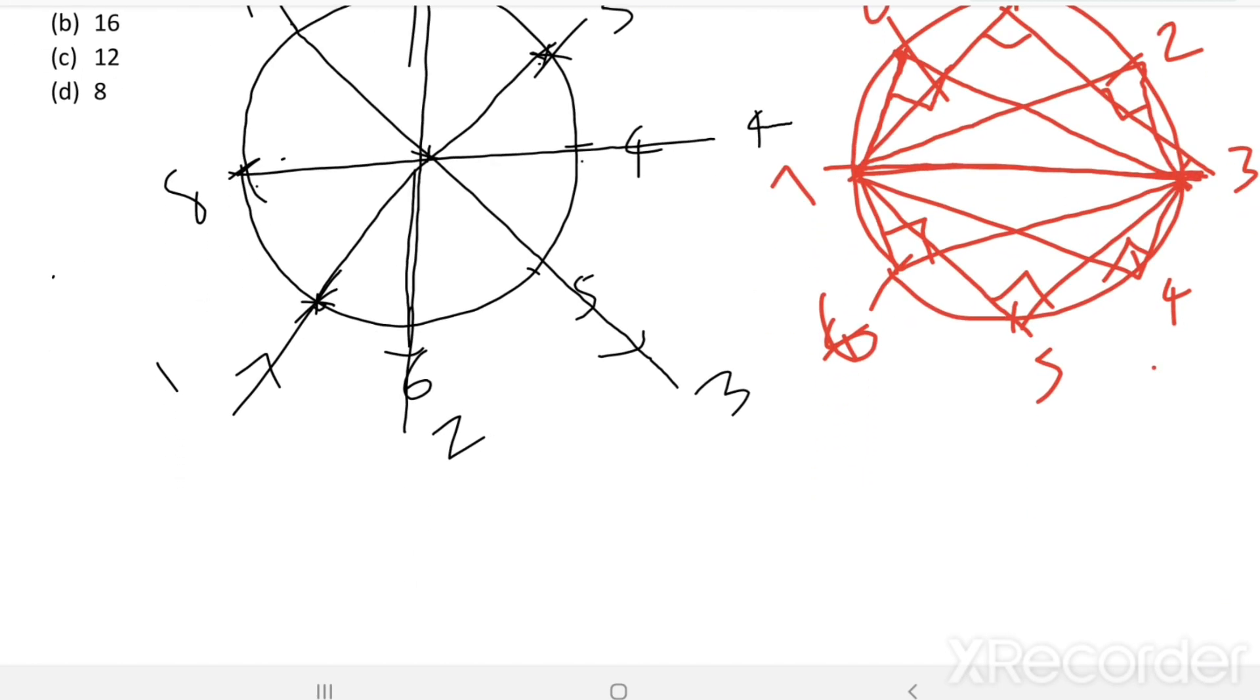So, there are four diameters. Then, from four diameters, from each diameter, we get six triangles. Then, four times six, there are 24 right-angled triangles.